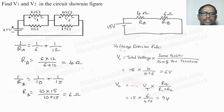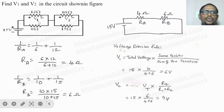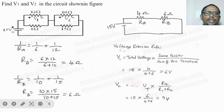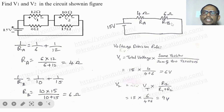The fourth problem: find V1 and V2 in the circuit shown. The 12 ohms and 6 ohms are in parallel, so Ra = (6 × 12)/(6 + 12) = 4 ohms. The 10 ohms and 15 ohms are in parallel, so Rb = (10 × 15)/(10 + 15) = 6 ohms. Ra and Rb are in series: 4 ohms and 6 ohms.